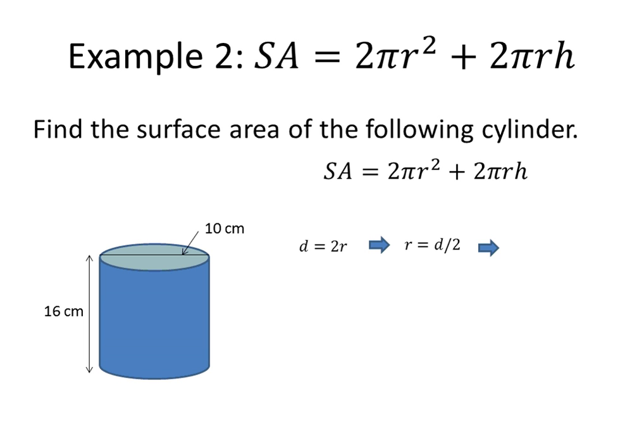The diameter is 10, so you do 10 divided by 2, which equals 5 for the radius. You want to substitute in 5, not 10, in our formula. So surface area equals 2 pi times 5 squared plus 2 pi times 5. And then the height of the cylinder is 16.